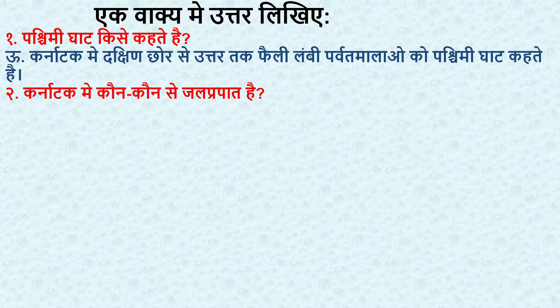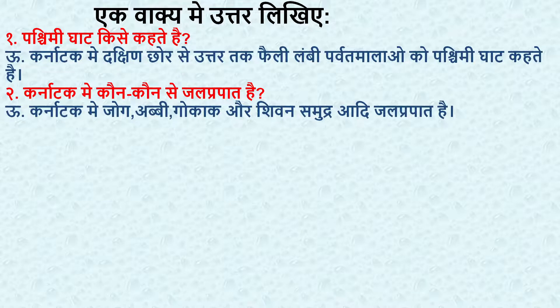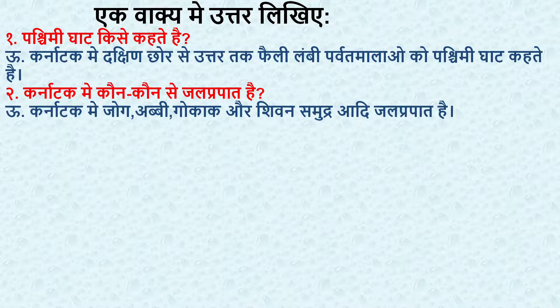Next question — Karnataka mein korn korn se jalprapat hai? Name the waterfalls of Karnataka. Answer: Karnataka mein Jog, Abbi, Gokak aur Shivan Samudra aadhi jalprapat hai. In Karnataka, we have Jog Falls, Abbi, Gokak, and Shivan Samudra.